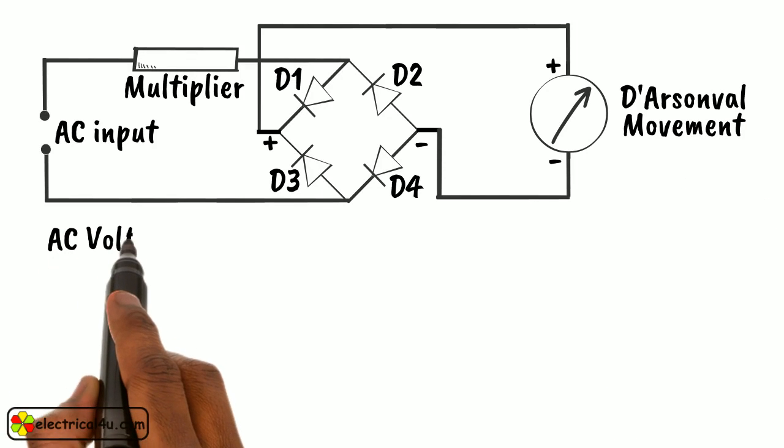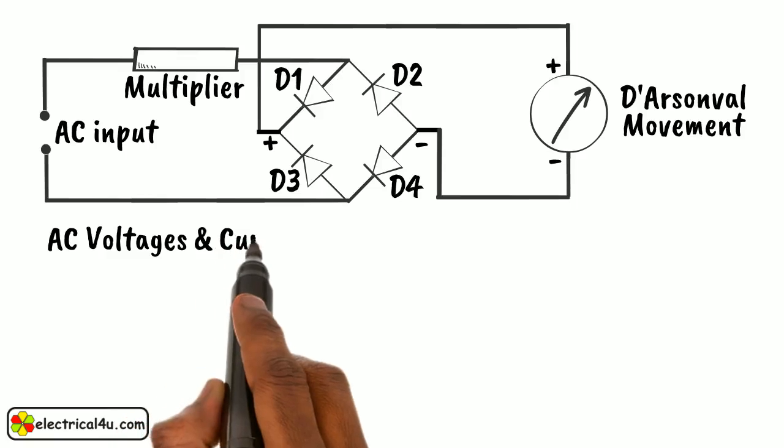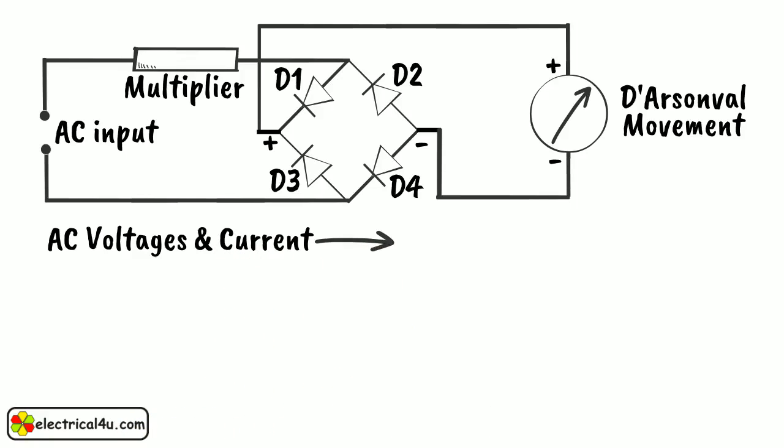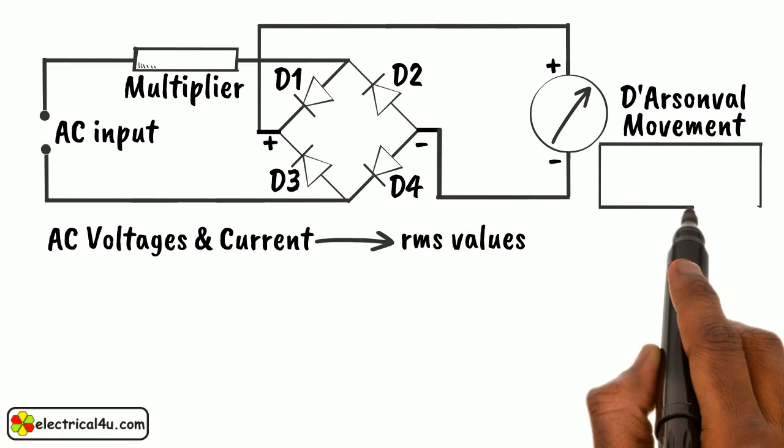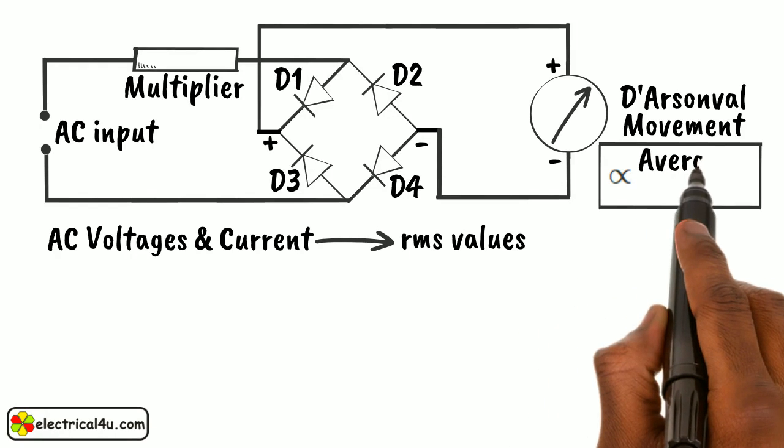AC voltages and currents are expressed in RMS values. But the D'Arsonval deflection is proportional to the average value.